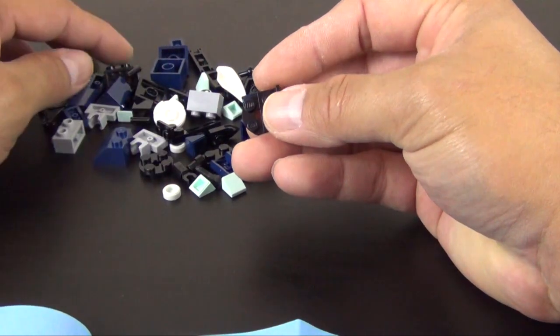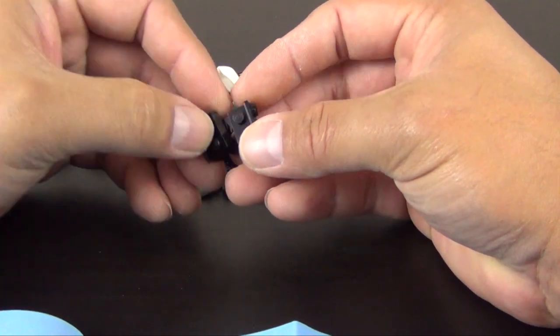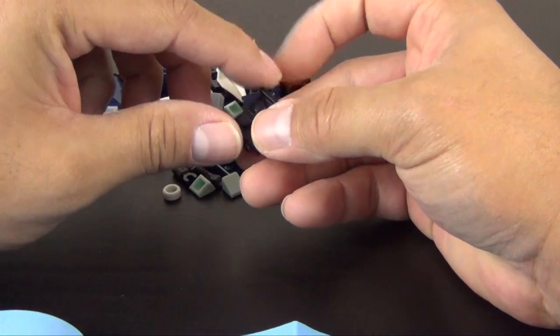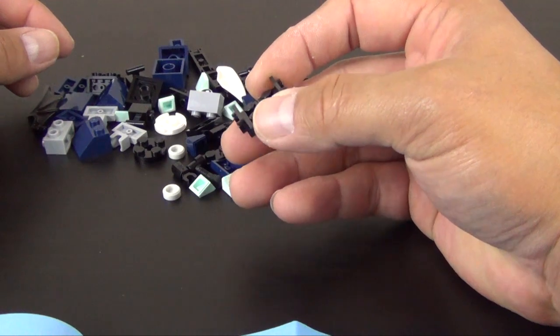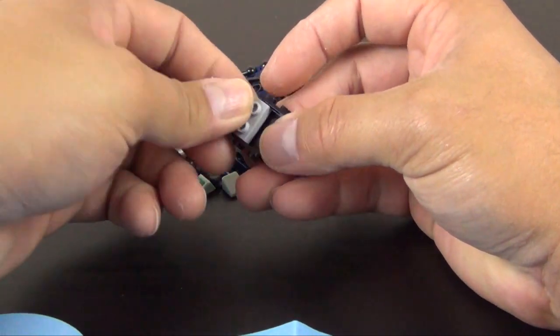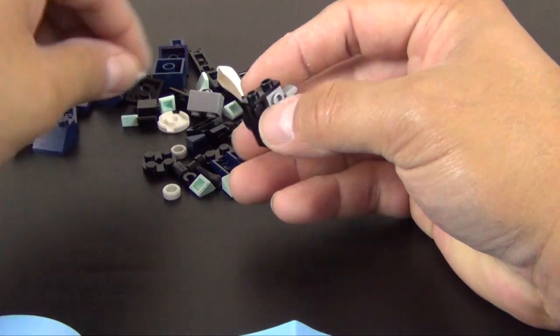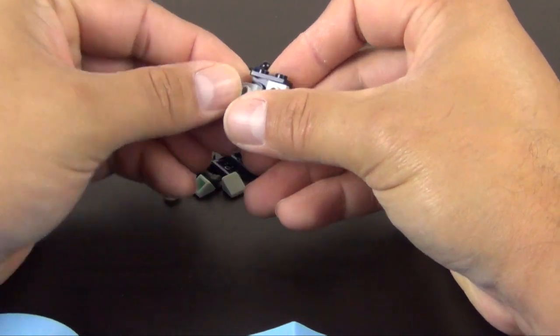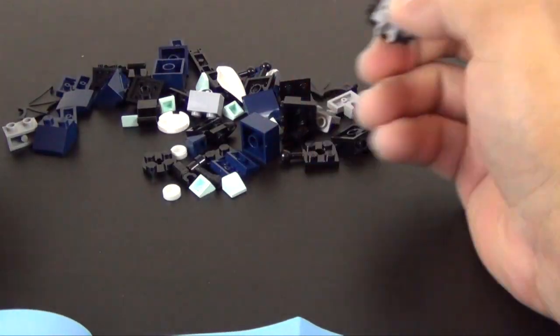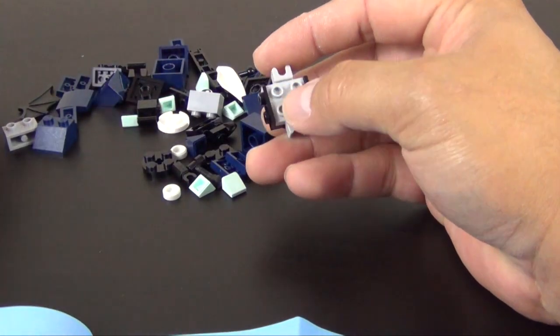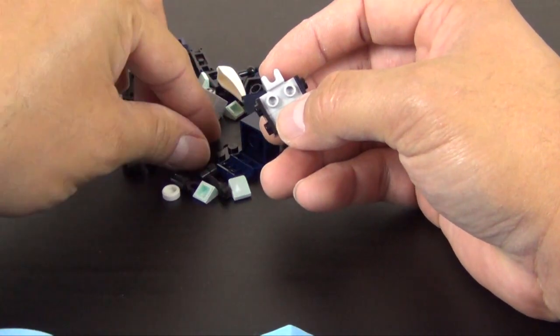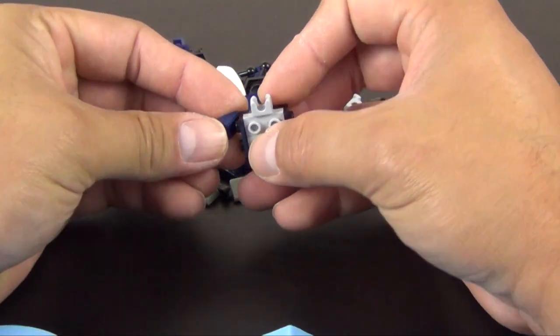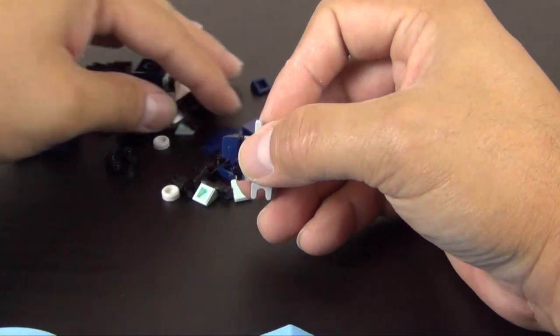So this one has 59 pieces. The Glowbird that we did only had 45 pieces. So we have an almost 15-part differential. Although these parts, even though it's more parts, seem a lot smaller. So it doesn't look like there's more. Kind of looks like the same amount of parts. Not that it really matters.